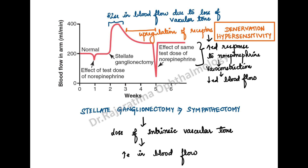This is the graph that I had shown you. Look at the x-axis, which is the time in weeks, and the y-axis, which is the blood flow — the volume or rate of blood flow. Stellate ganglionectomy is being performed, and we're examining what happens before and after that.